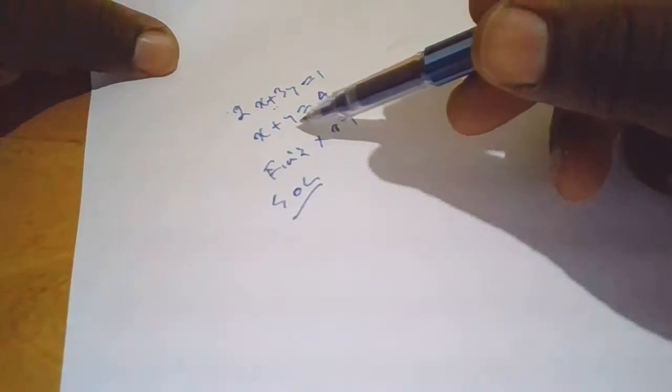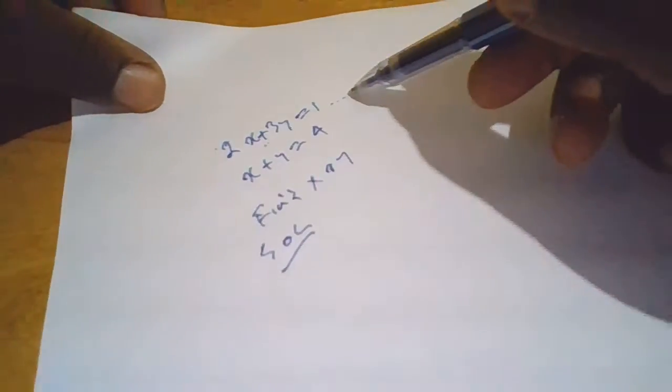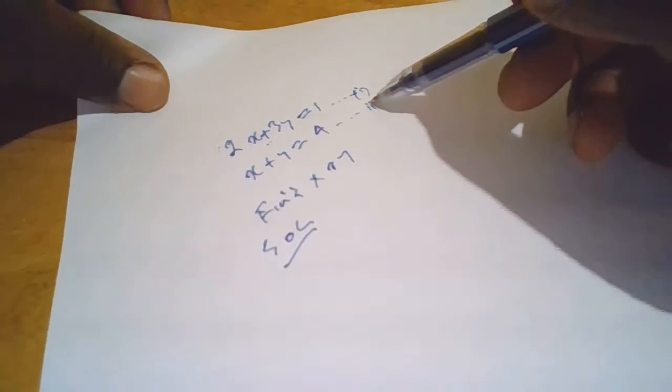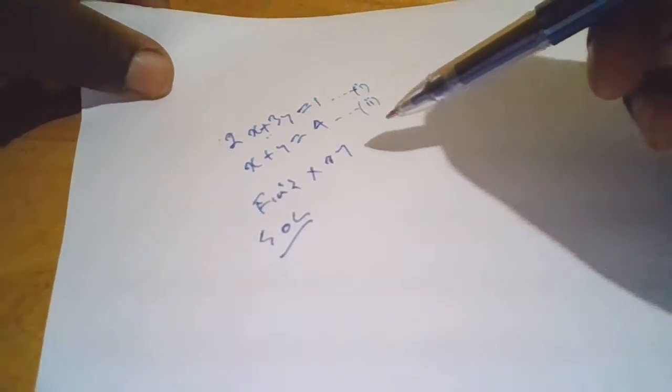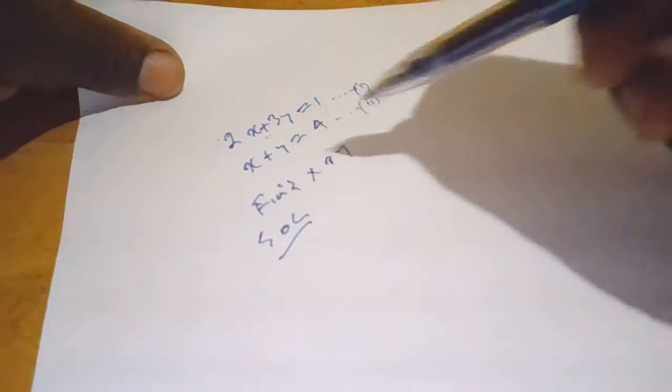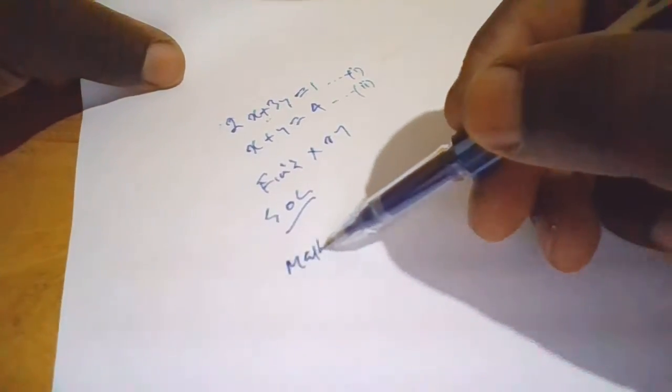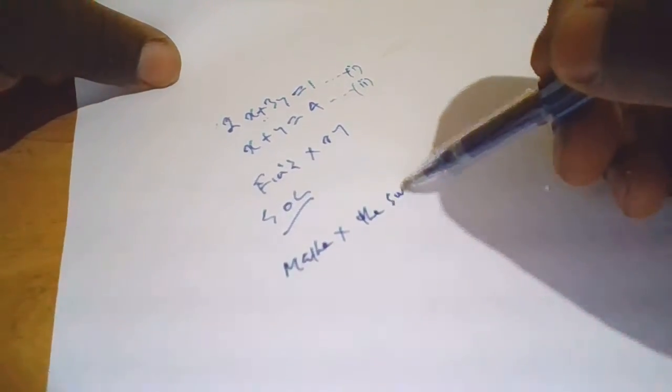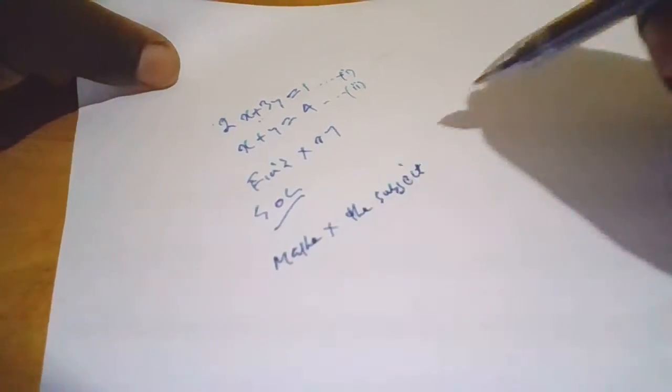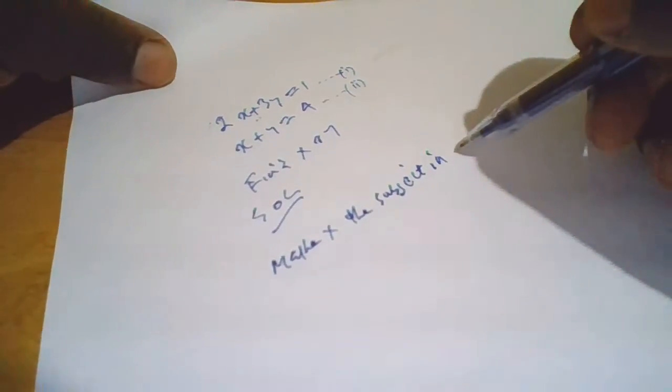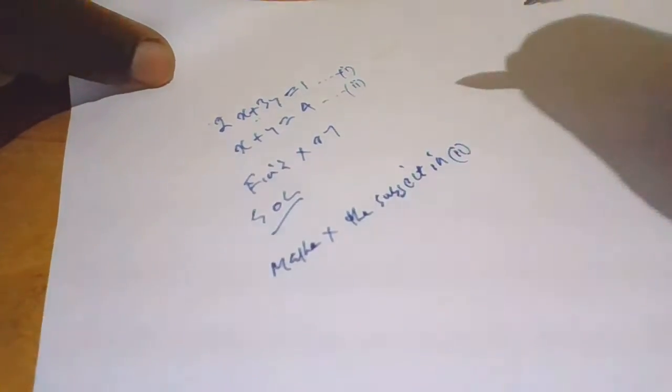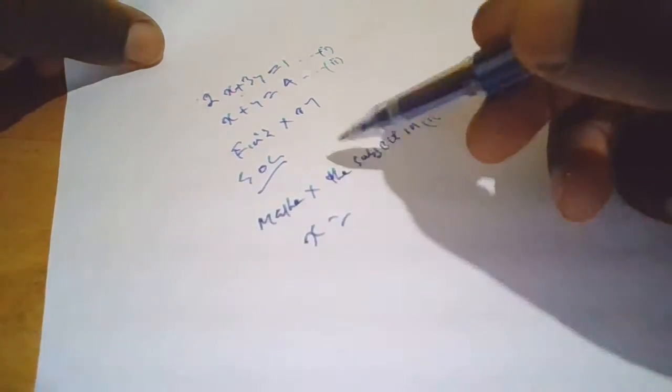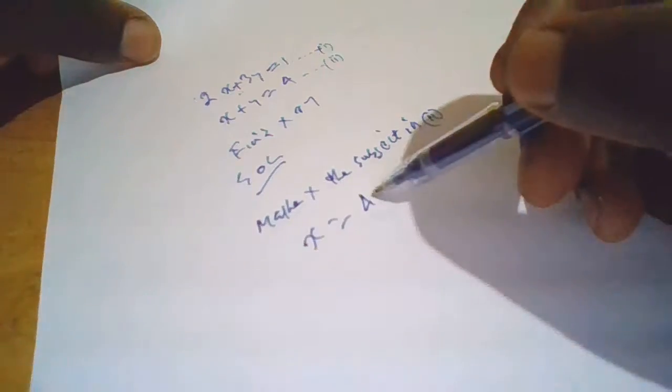So we make x the subject. This is equation 1, this is equation 2. So make x the subject in equation 2. So it would be x equals 4 minus y.